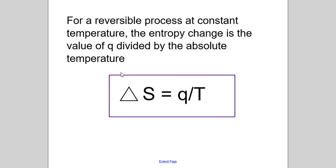Okay, this brings us to this equation here. So delta S equals Q divided by T. So for reversible process at constant temperature, the entropy change is the value of Q divided by the absolute temperature. So Q, this is the same Q from Q equals MCAT. So this is just going to be heat. And then T here, this is absolute temperature, which means Kelvin. Kelvin. So I added an E there. Oh, no. There we go. Kelvin. There we go. Spell it correctly.